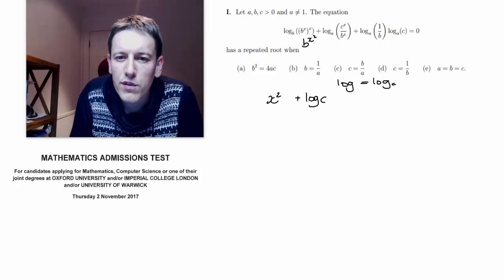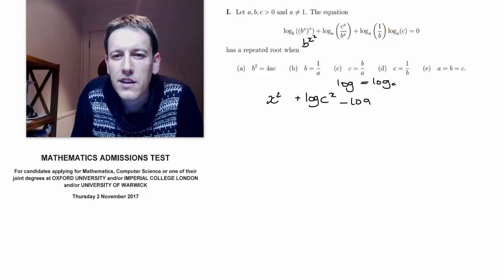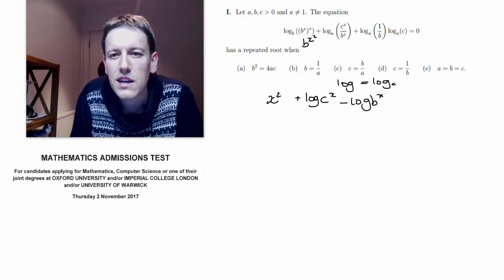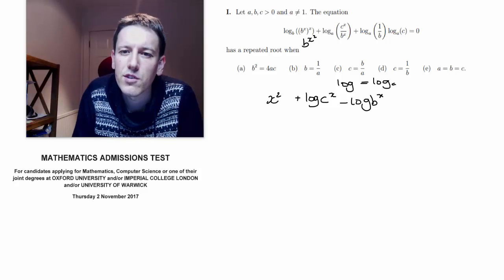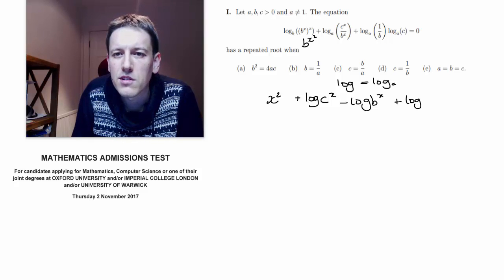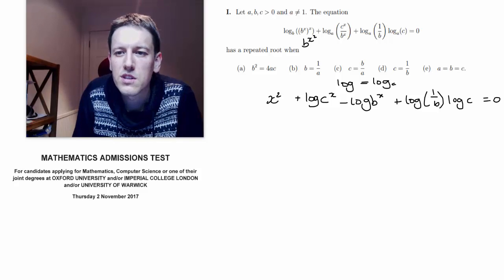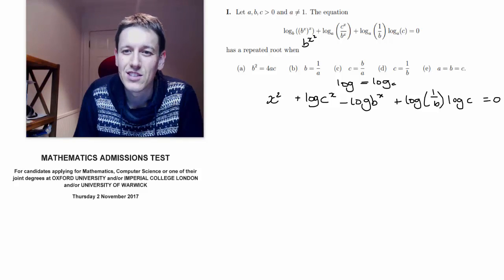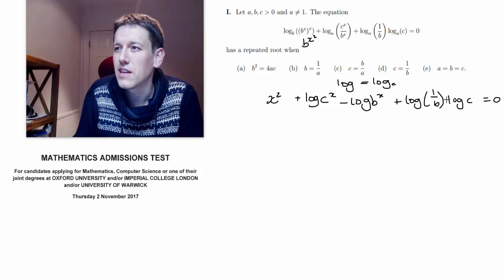So I've got log of c to the x minus log of b to the x, and then I've got this thing here plus log of 1 over b times log of c equals 0. There's no rule of logs that allows us to deal with this final term here.